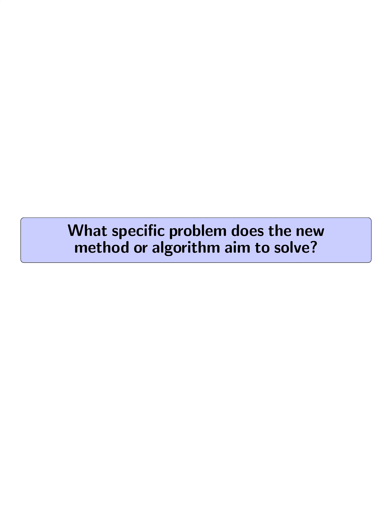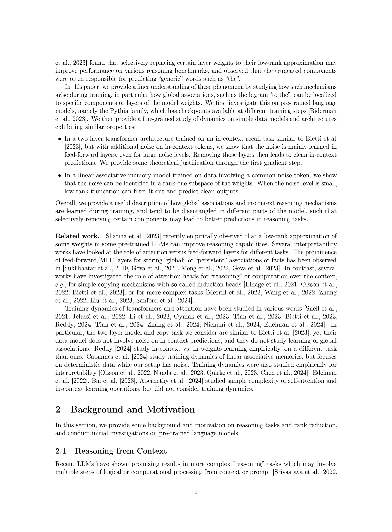What specific problem does the new method or algorithm aim to solve? The new method aims to solve the problem of how transformer language models learn to process global associations differently than in-context inputs, and how truncating specific weights or layers, particularly feed-forward layers, can help improve performance on reasoning tasks.